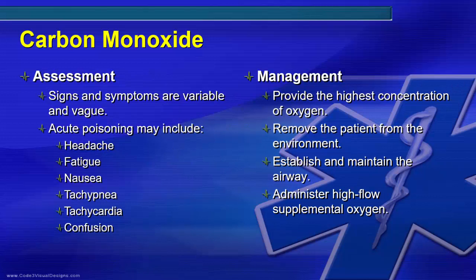CO poisoning can be difficult to diagnose in the field. Consider the patient's environment — was there adequate ventilation? Was a source of combustion present, such as gasoline engines? The signs and symptoms are highly variable and vague, often resembling early onset of the flu — headache, nausea, and vomiting. With acute CO poisoning, the patient may experience headache, fatigue, nausea, tachypnea, tachycardia, and confusion. The cherry red color seen in light-skinned people is a late sign of CO poisoning, typically seen in the morgue. Many EMS organizations have placed CO detectors on portable equipment to alert the crew of hazards.